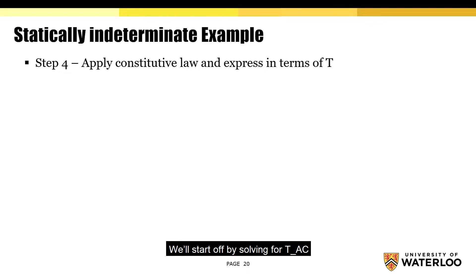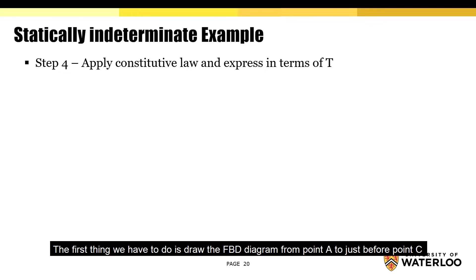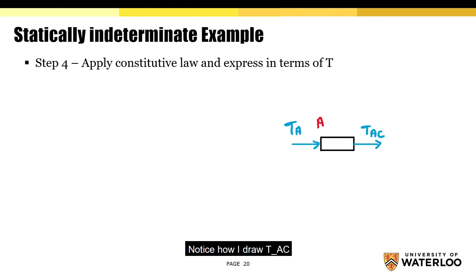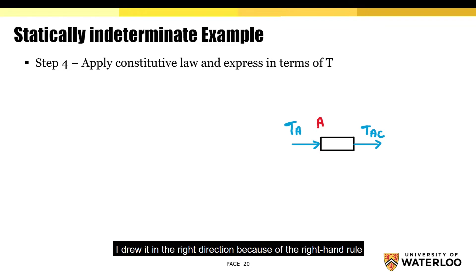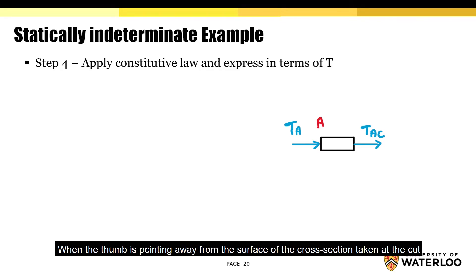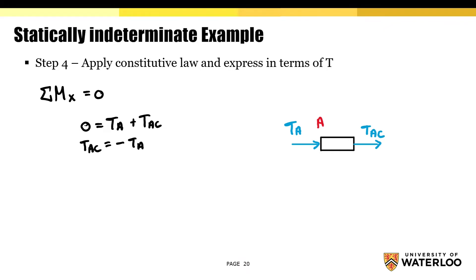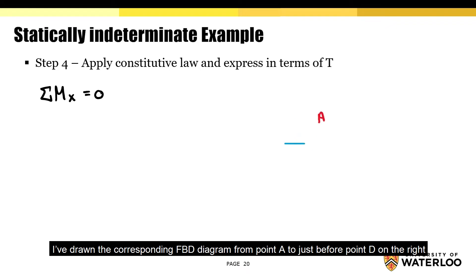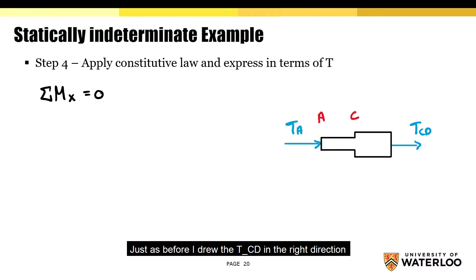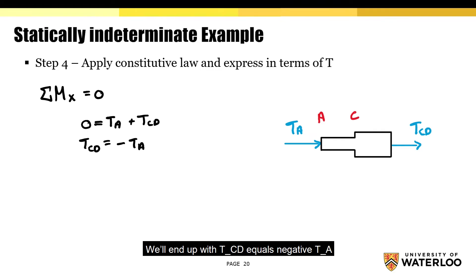We'll start by solving for T-AC. We draw the FBD from point A to just before point C, drawing T-AC in the correct direction based on the right-hand rule, where the torque is positive when the thumb points away from the cross-section surface at the cut. Taking the sum of moments about the x-axis gives us T-AC equals negative T-A. Moving on to T-CD, with the FBD drawn from point A to just before point D, summing torques about the x-axis gives T-CD equals negative T-A.